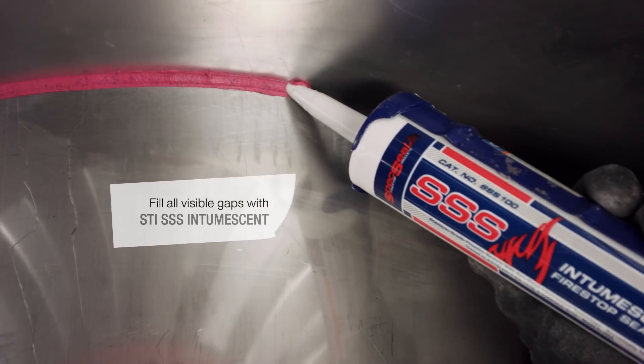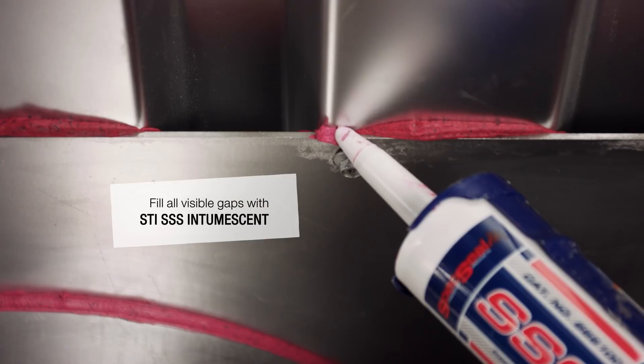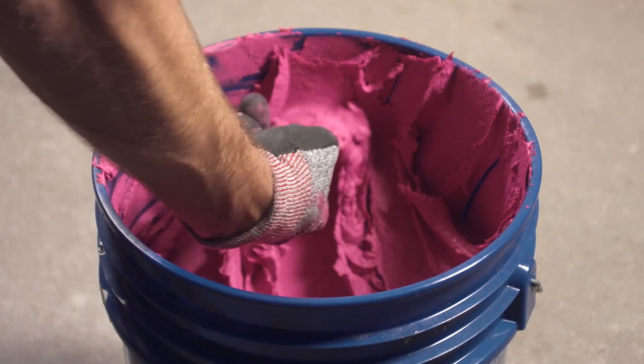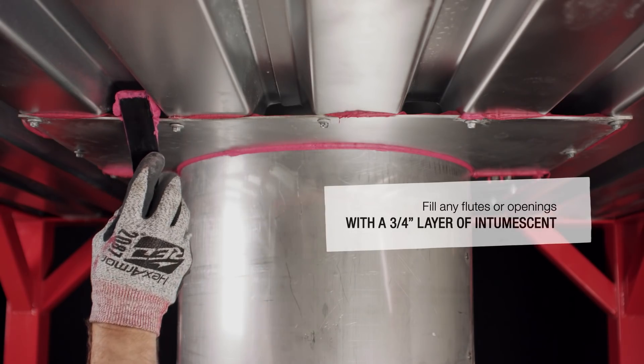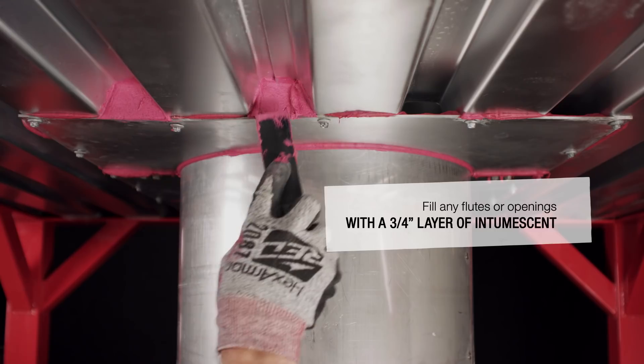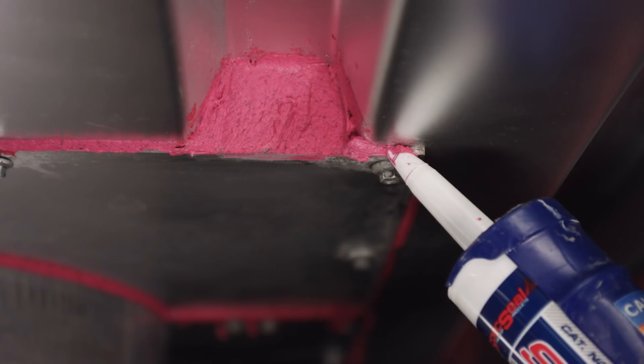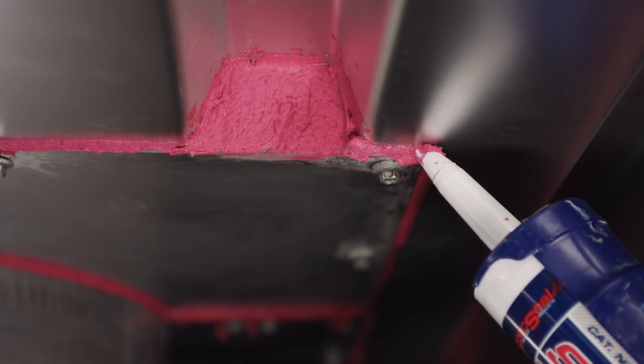Fill all gaps around the duct and the edges of the fire plates using intumescent. If your floor type contains flutes or openings as shown here, fill them with a three quarter inch layer of intumescent. Otherwise, just ensure the fire plate is sealed all the way around.